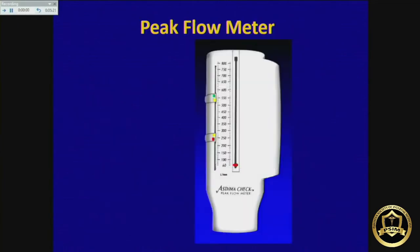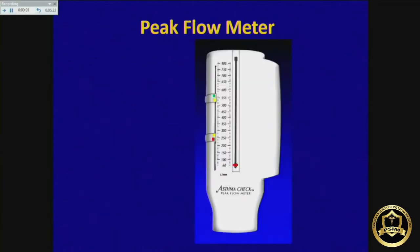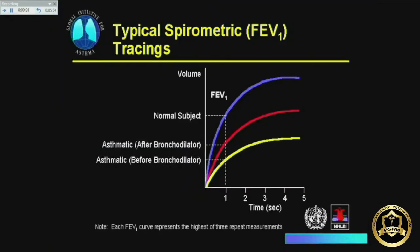To confirm the diagnosis, you need a simple gadget called a peak flow meter. If you can show reversibility of 15 percent by checking the peak flow, you confirm the diagnosis of asthma. This gadget is available in Pakistan for around 800 rupees, but I have not seen many family physicians or even chest physicians using it. Without it, you cannot diagnose asthma, you cannot assess its severity, and you cannot assess the response to treatment.